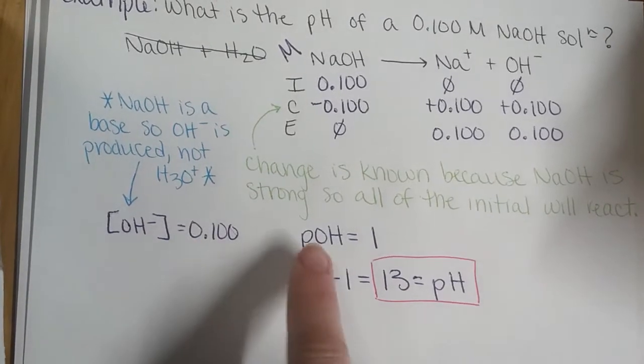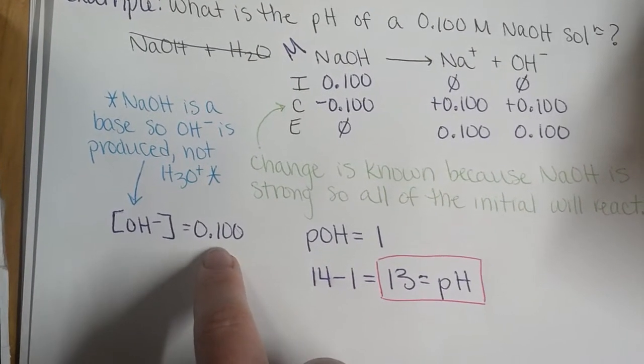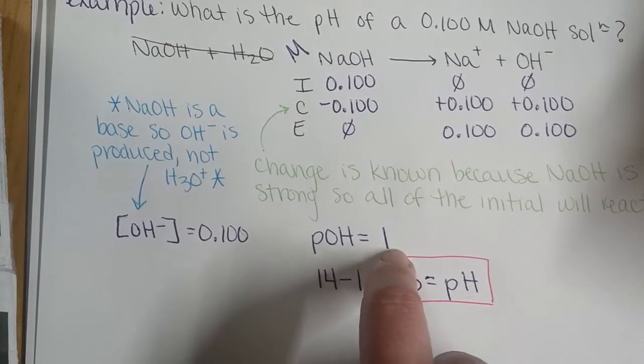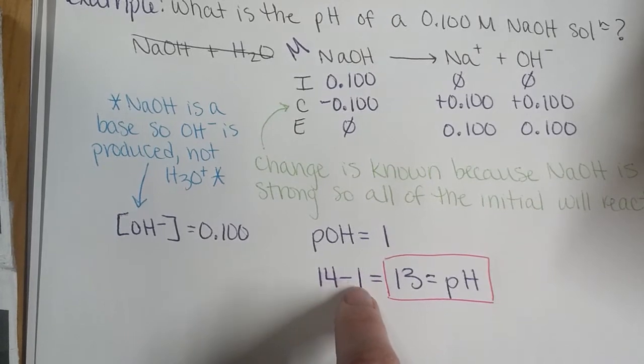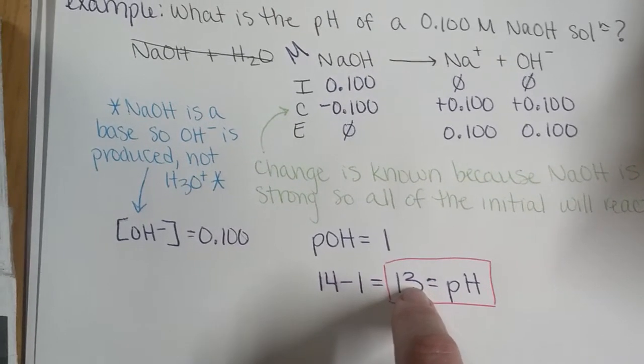So then we want to calculate our pOH. We'll take the negative log of our concentration of hydroxide ion. That's equal to 1. And then we take 14 minus 1 is equal to 13, which is our pH of this solution.